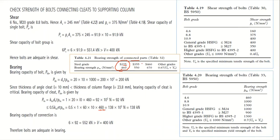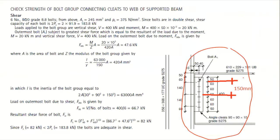The values are taken from Table 4.21 and Table 4.19 (Table 30 of BS 5950), which clearly show the bearing strength for each bolt grade and connected part. For a 275 steel grade connecting part (the UC/column), the bearing strength pbs = 460 N/mm² is used.